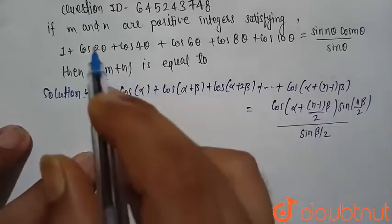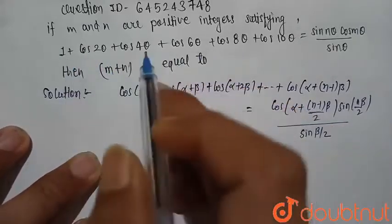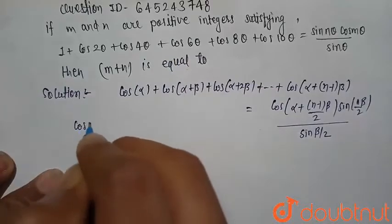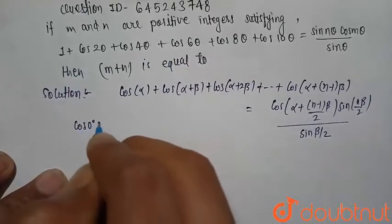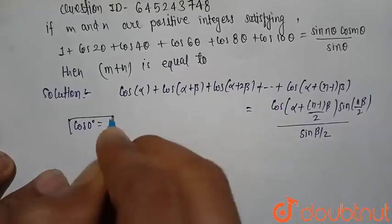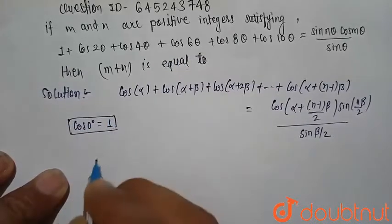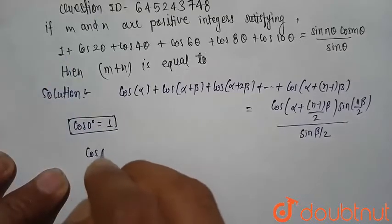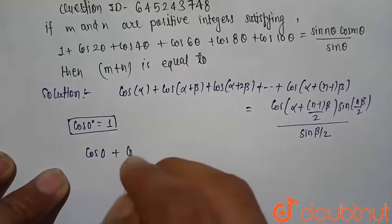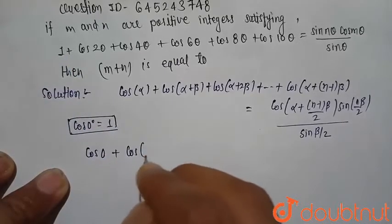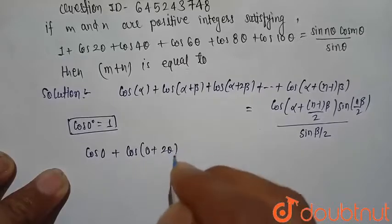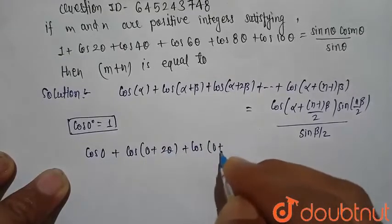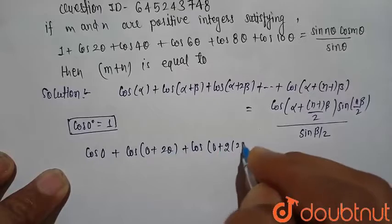Now we write our equation. The 1 can be written as cos0, since cos0 equals 1. So we can write: cos0 plus cos(0+2θ) plus cos(0+2×2θ), and so on, matching the pattern of the formula.